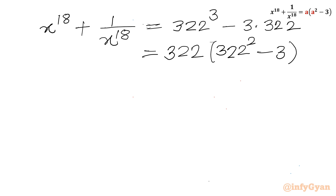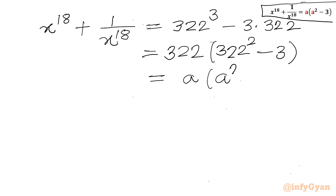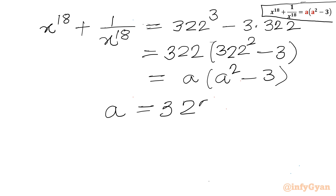We can see that our RHS is of the form a times a squared minus 3. Once we compare both sides, a will be equal to 322. This is our answer.